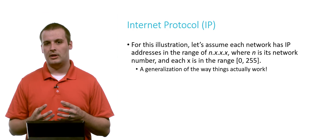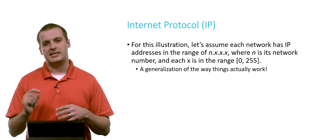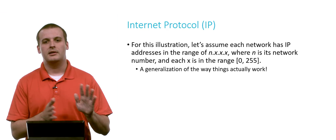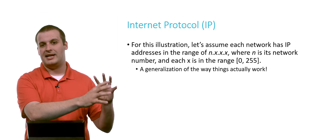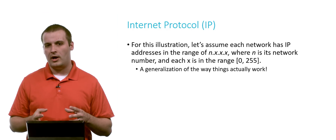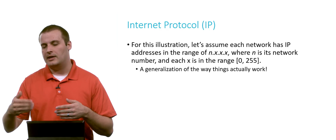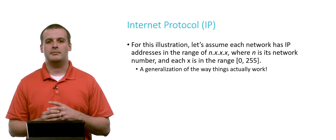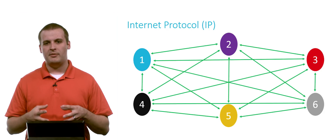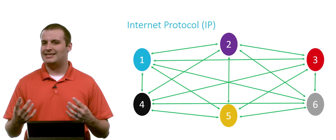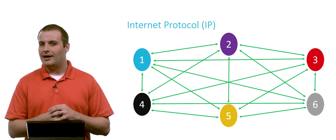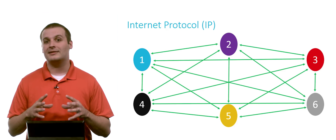In our six-network example, every IP address on network one starts with '1.something', and similarly for the others. This is a generalization of how things actually work — it's more precise in reality, but it gives a general idea. The previous fully-connected diagram was not sustainable. Even at six networks it might be manageable, but at 10, 20, or 50 networks we'd be laying a lot of wires — and 50 is still nowhere near the actual number of networks that exist.